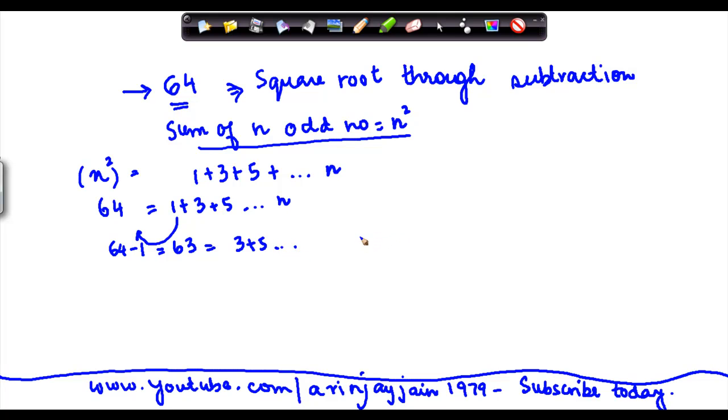So I keep on subtracting the odd numbers one by one and I need to find out how many odd numbers do I need to subtract to make this 64 equal to 0.